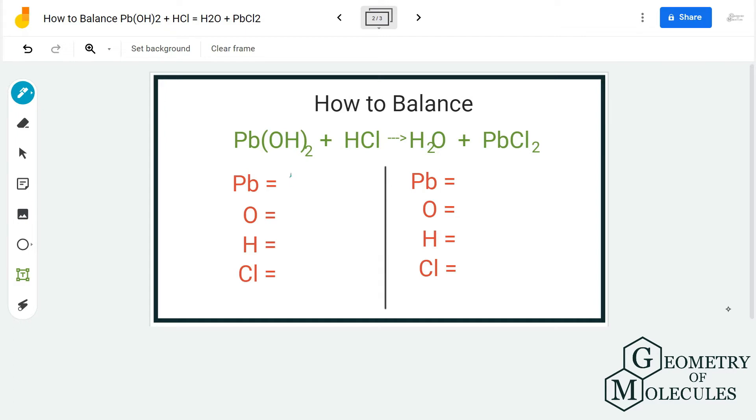Starting with reactant side we have one atom of lead or Pb. We have two atoms of oxygen because there is a coefficient here, and then we have two hydrogen atoms plus there is one hydrogen atom here. So three hydrogen atoms.